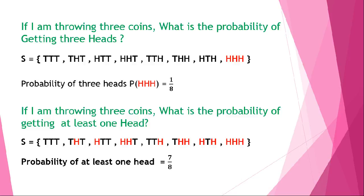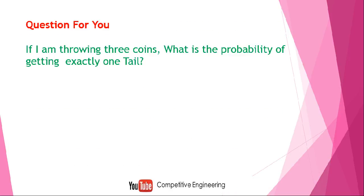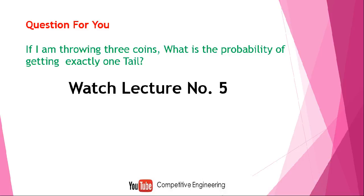I have now concluded some ideas regarding drawing three coins and a higher number of coins. I hope you can solve problems based on these concepts after watching this video. Here is a question for you: if I am throwing three coins, what is the probability of getting exactly one tail? Write the sample space and find the answer, and post it in the comments. Watch lecture number five for more detailed explanation and new ideas. Thank you for watching.